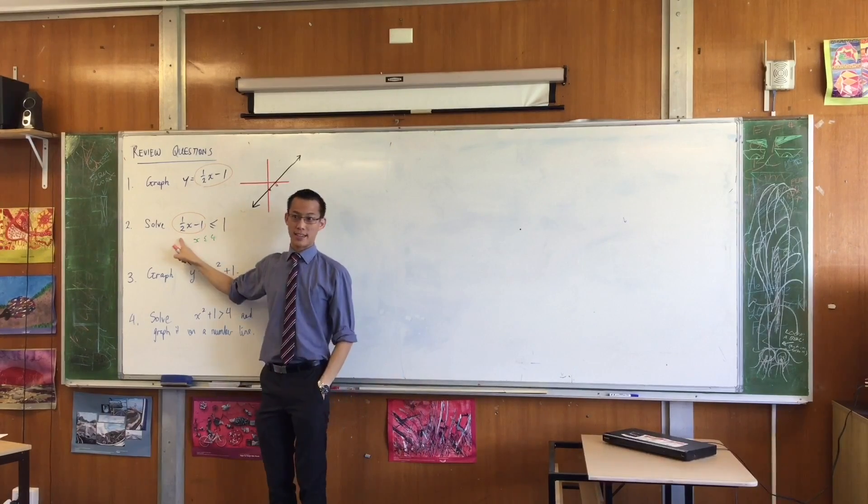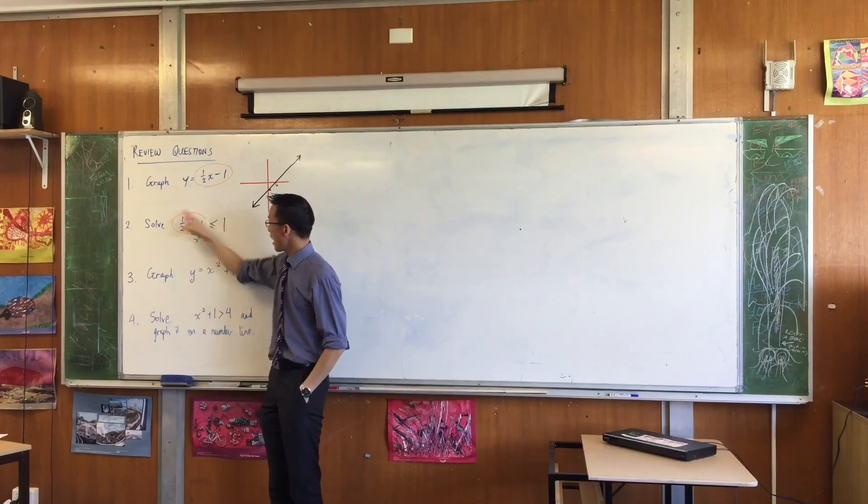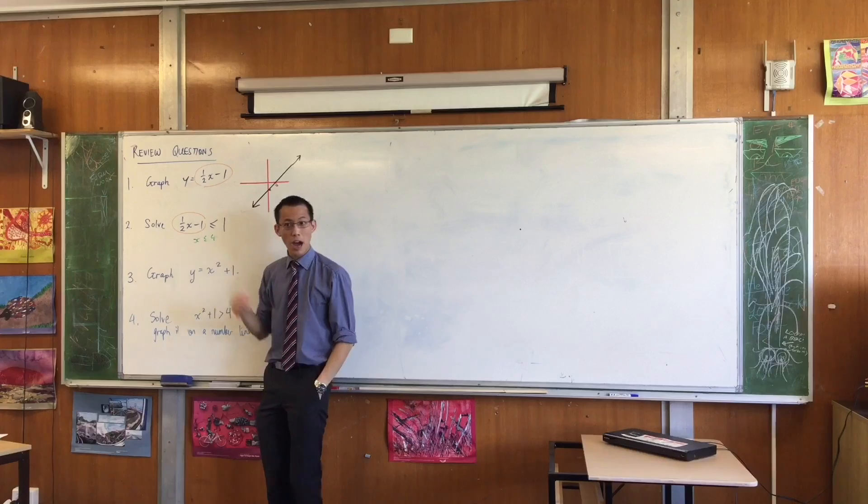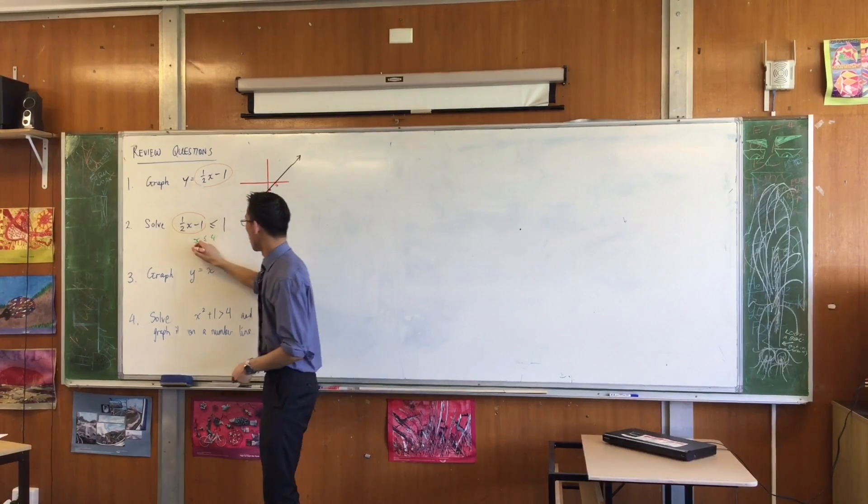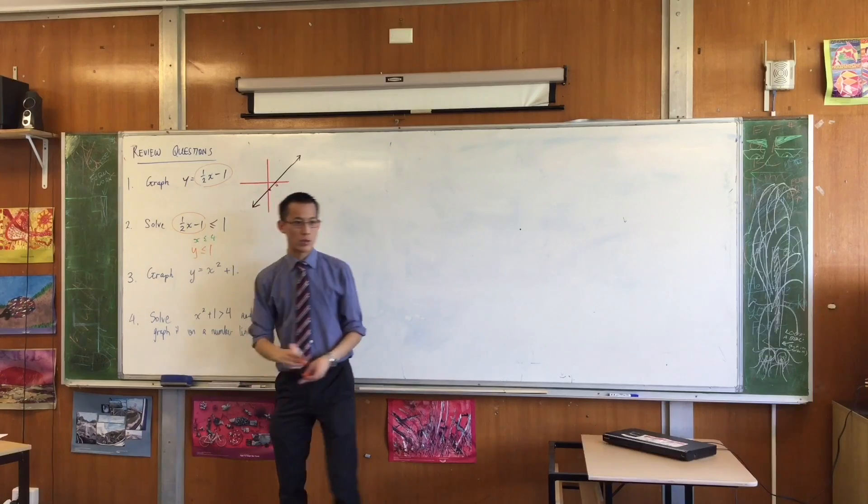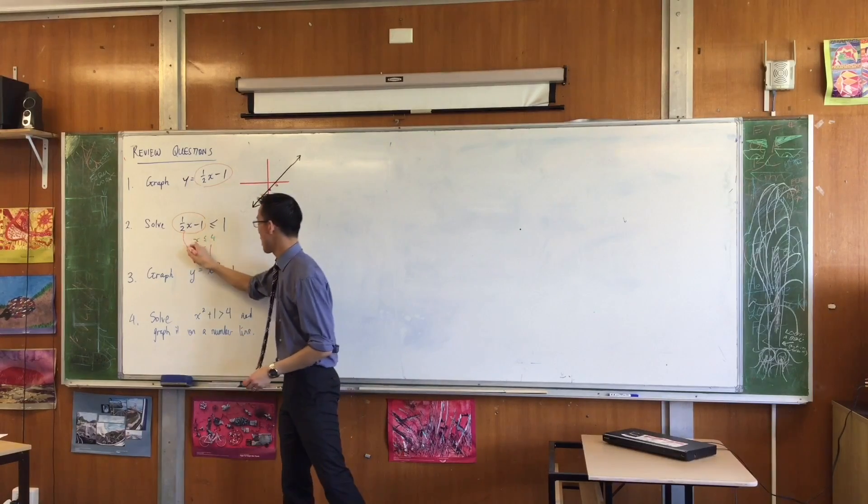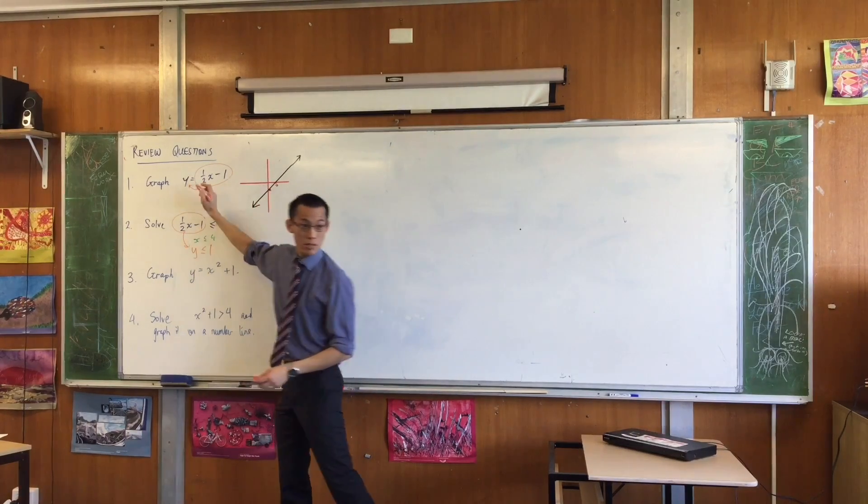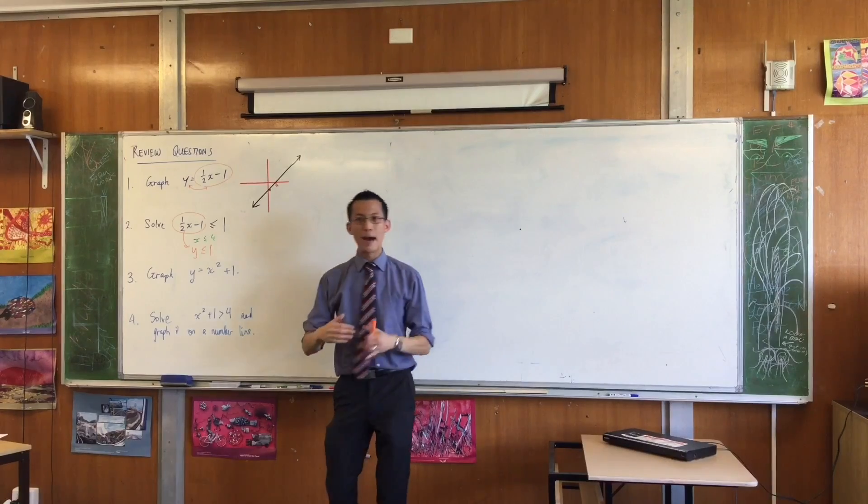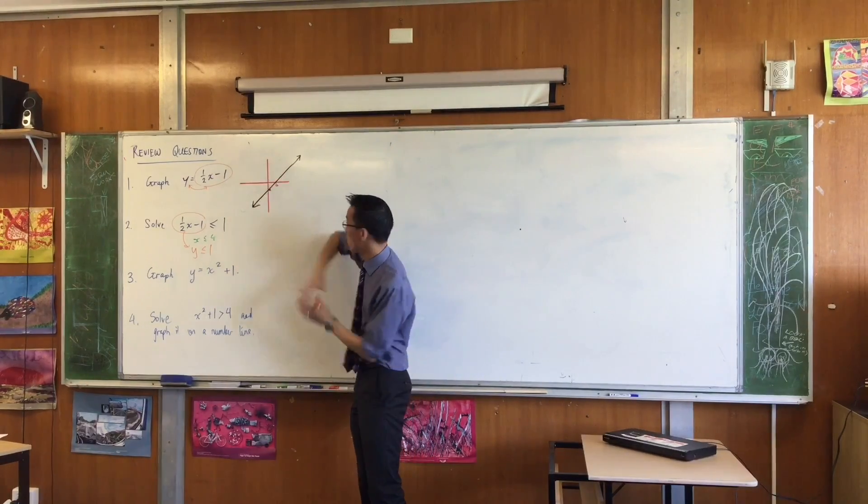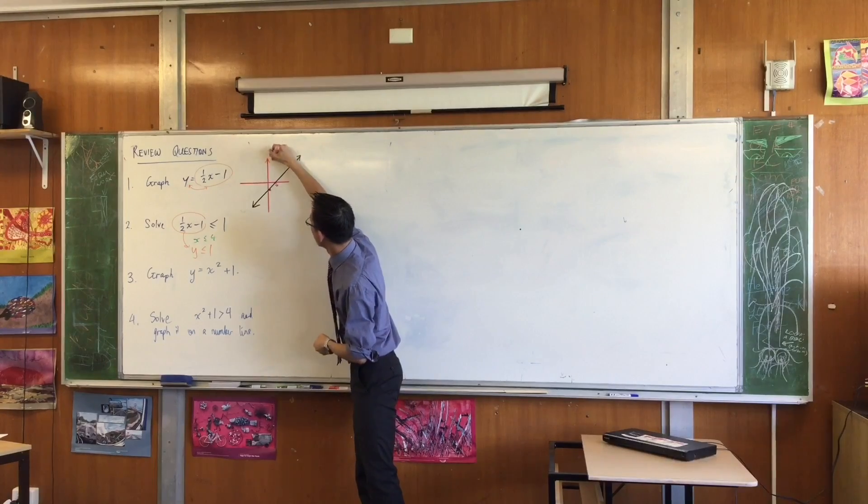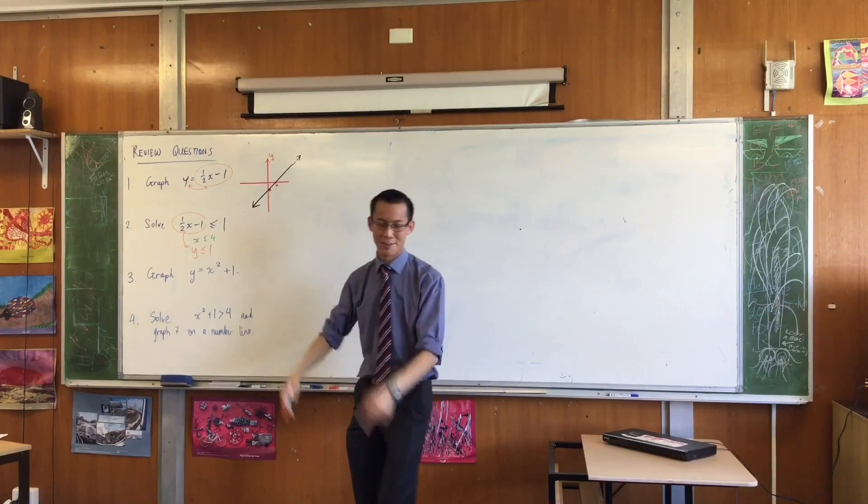Which is why the first thing I ask you to do is draw a picture. What this is asking is half x minus 1. I can think of that as a straight line. In fact, I can just substitute this in. Y is less than or equal to 1. Do you see that? Comes from here. Now y is about up and down.